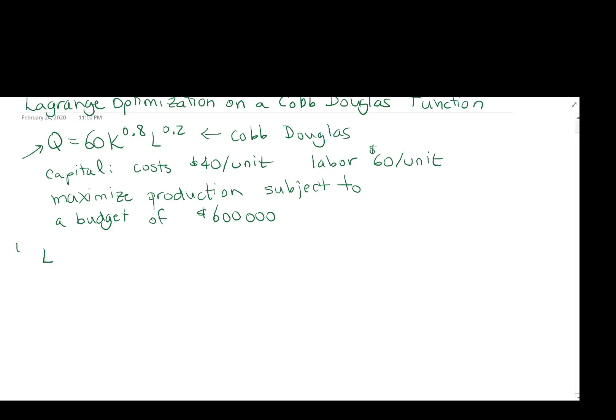So step one, we're going to set up the Lagrange function which is the following: 60K to the 0.8, L to the 0.2, plus lambda times our constraint. Now our constraint is going to be defined by these terms right here. So our constraint is the following: 40K plus 60L. 40 times K for our capital cost, 60 times L for our labor cost is going to be equal to $600,000. So that gives us 40K plus 60L minus 600,000 is our constraint. So step one, that is our Lagrange function.